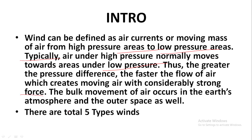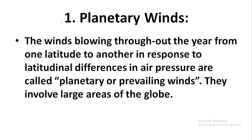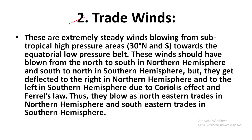The bulk movement of air occurs in the Earth's surface, atmosphere, and outer space as well. There are a total of five types of winds. The first one is planetary winds. The winds blowing throughout the year from one latitude to another in response to the latitudinal differences in air pressures are called planetary or prevailing winds. They involve large areas of the globe.